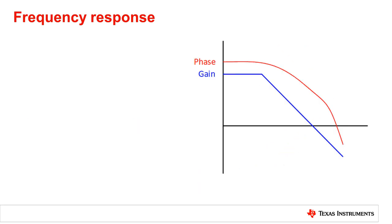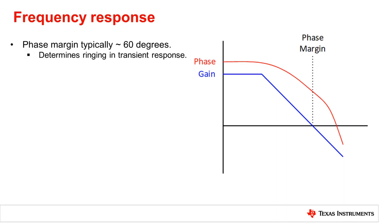On the right a typical frequency response of a buck converter is shown. Phase margin is the value of phase when the gain crosses over the zero dB point. Typically it is around 60 degrees to avoid ringing in the transient response.